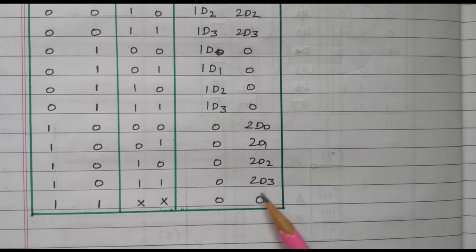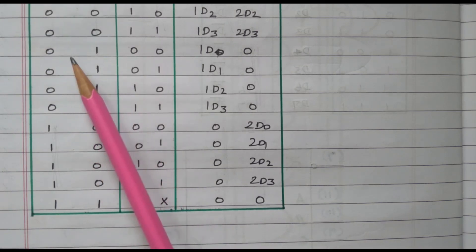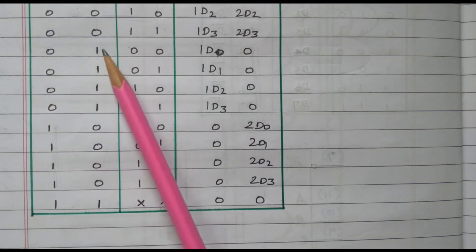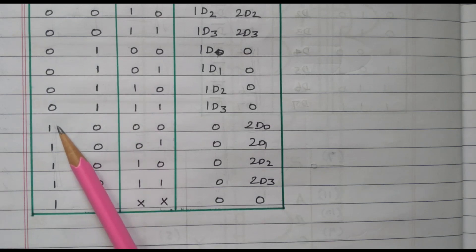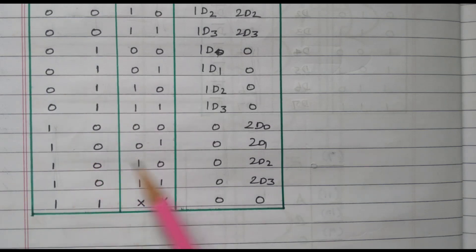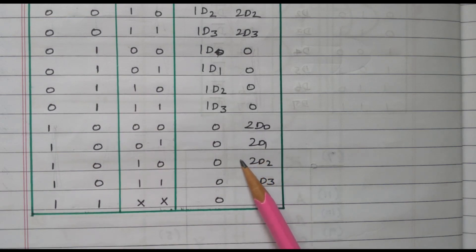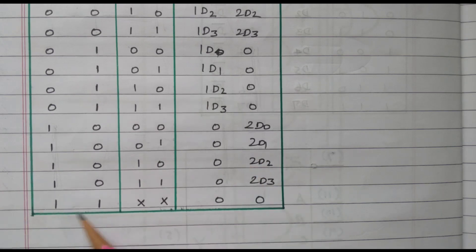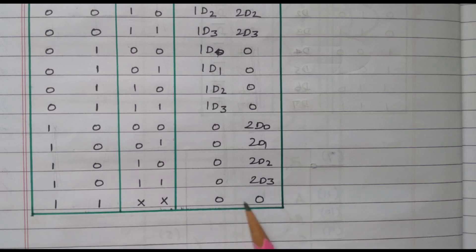We discussed three cases: first, both multiplexers activated by making both enables 0 — we get both outputs. Second, first multiplexer activated and second deactivated. Third, first deactivated and second activated. We can operate both multiplexers independently or any one at a time. If both enables are 1 — disabled — whatever may be the selection line, the output will be 0.